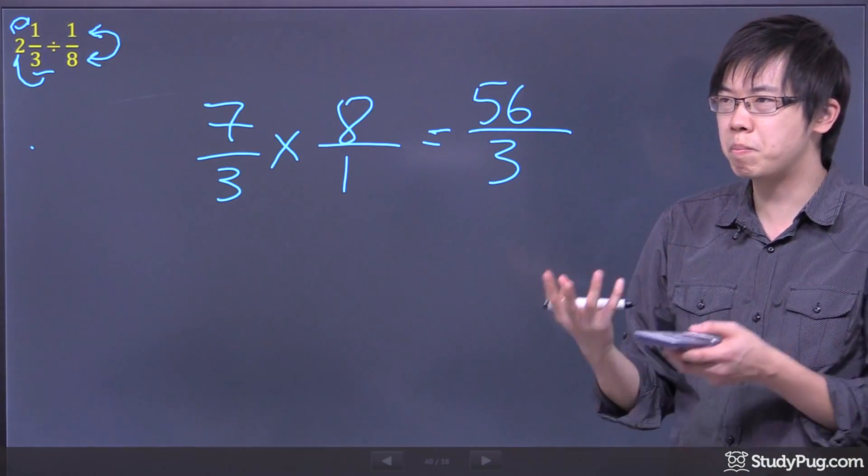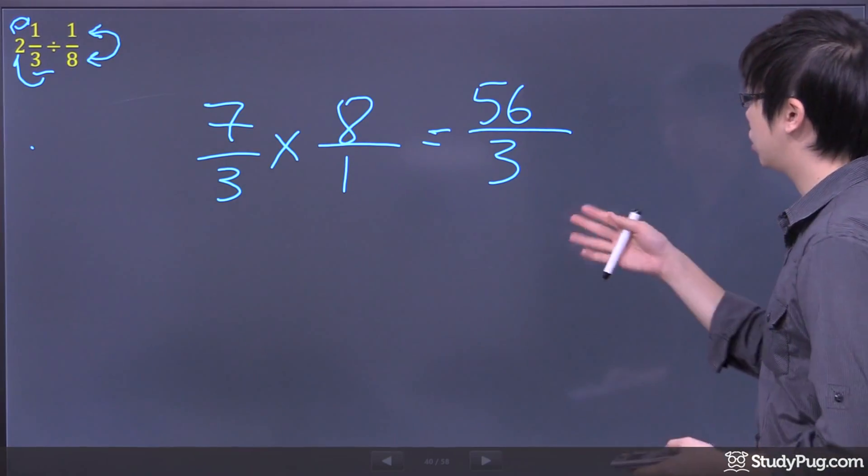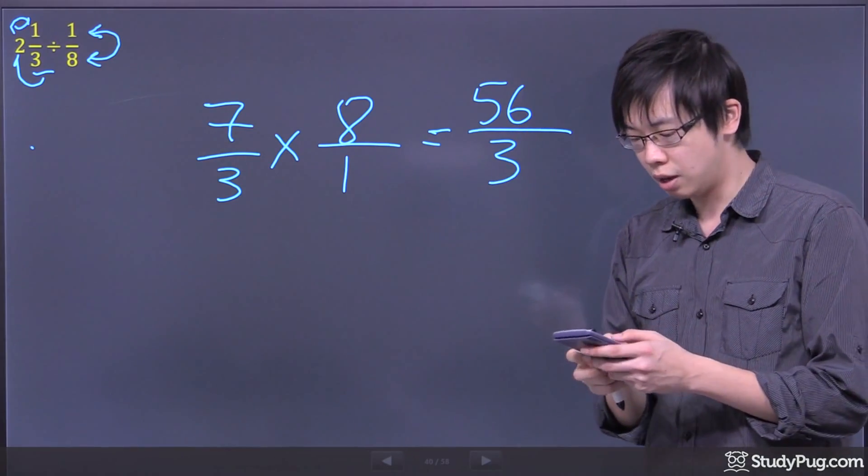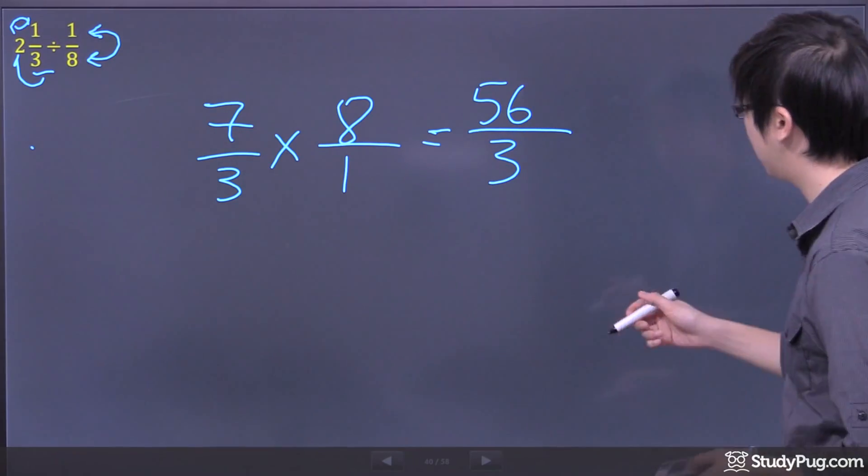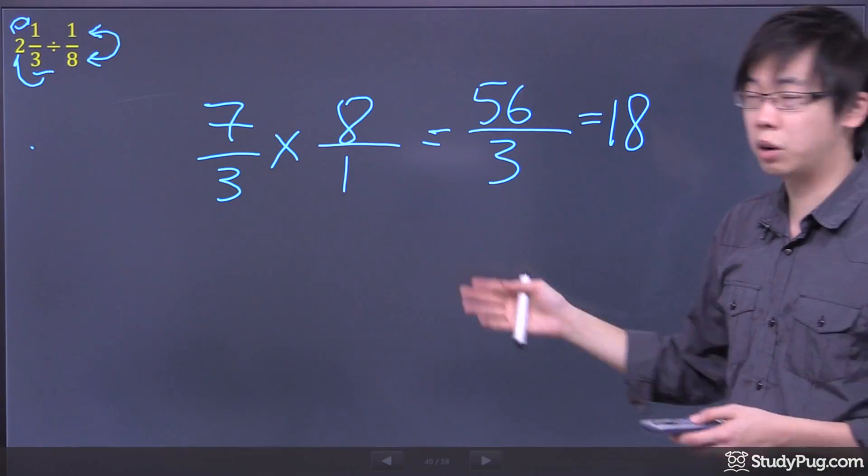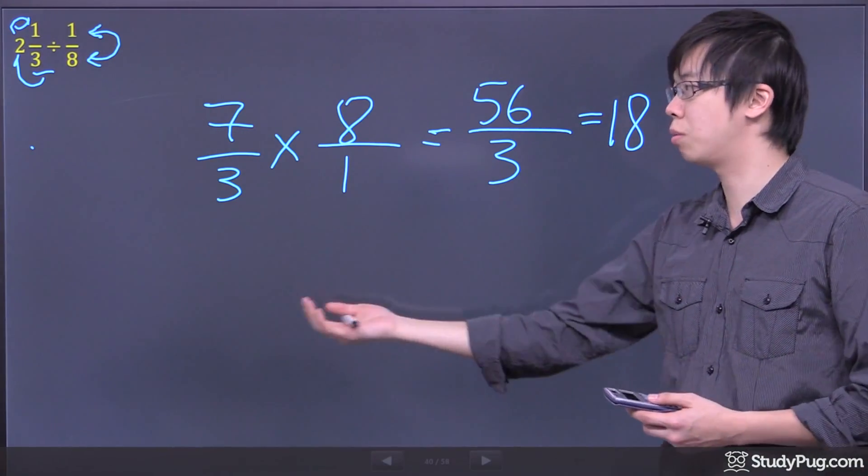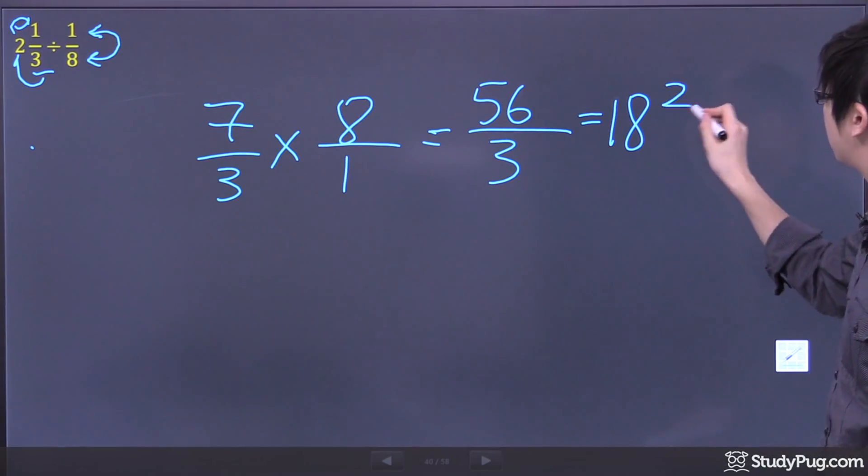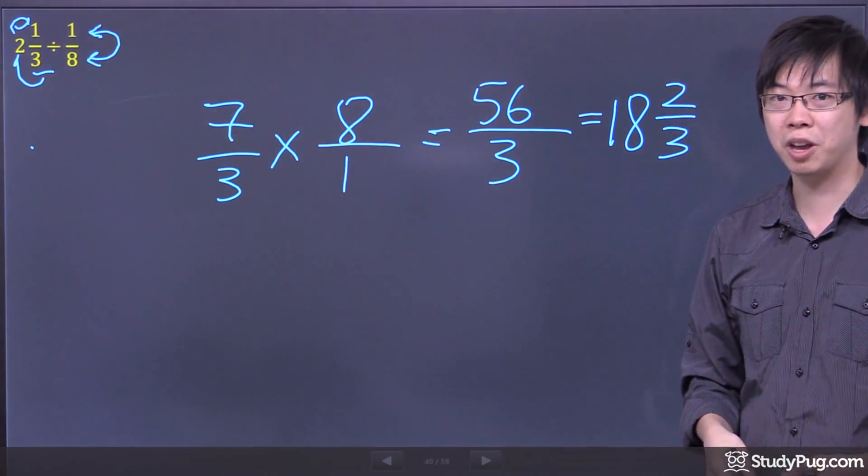Now if you want to change it into a mixed fraction, then you just have to think about how many times does my 3 go into 56. Because I have my calculator, I already see the answer. It turns out there's 18 times. That's why I say I don't want to draw the diagram because you'll pass this whole screen right here. And the remaining will be just 2/3 left over.